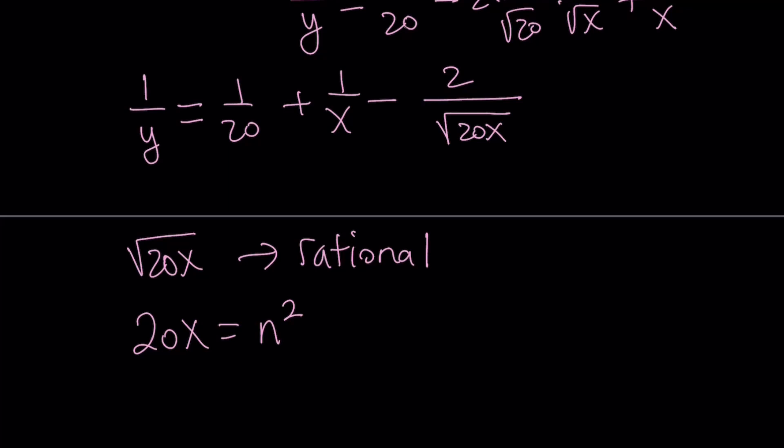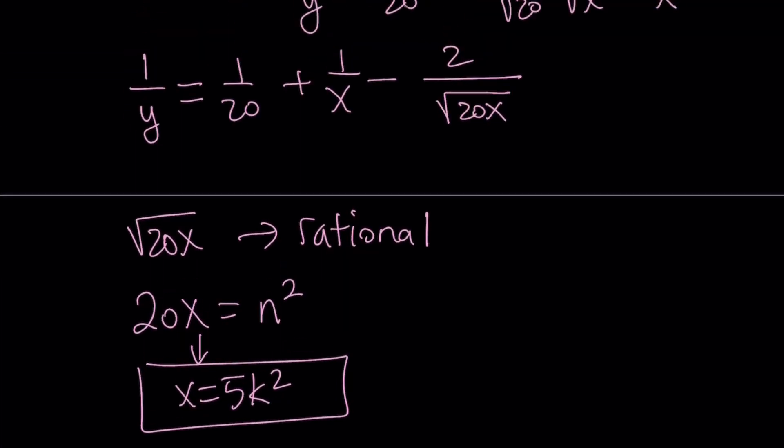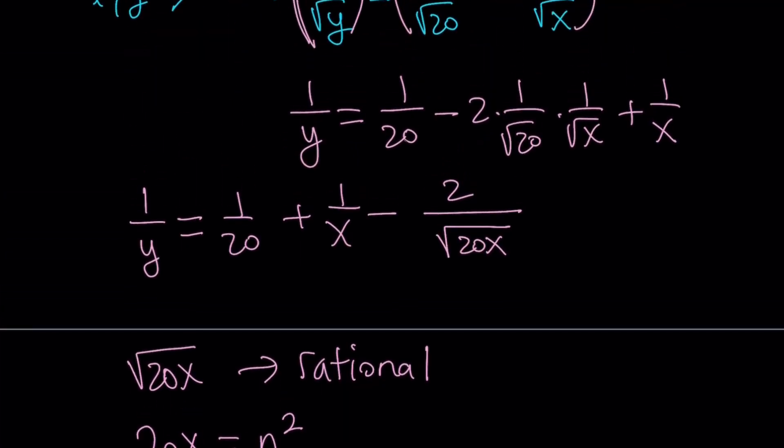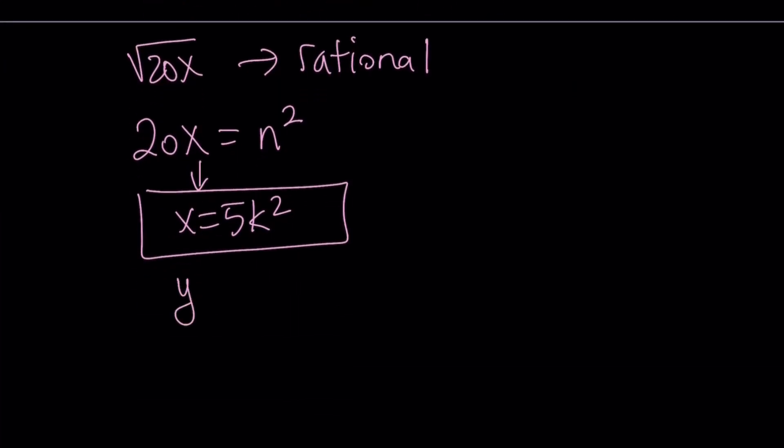But it could also be 5 times another square. So x can basically be written as 5 times k squared, where k is an integer. And similarly, if you isolate 1 over square root of x and square both sides and go through the same thing, y can be written as 5 times m squared. Because it's symmetrical, you're going to get the same idea.